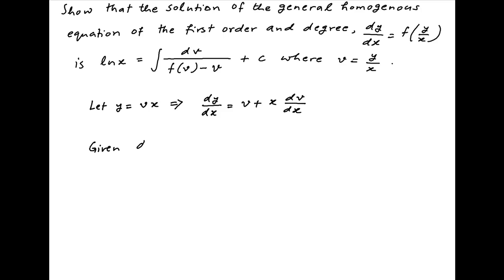Now we are given that dy upon dx is equal to f of y upon x. Therefore this can be written as v plus x times dv upon dx is equal to f of v which implies that x times dv upon dx is equal to f of v minus v.